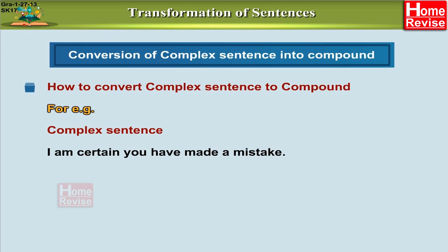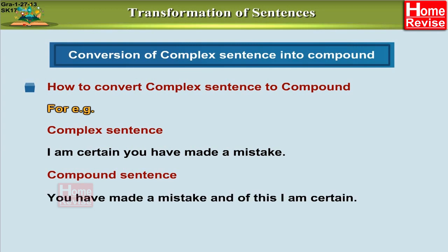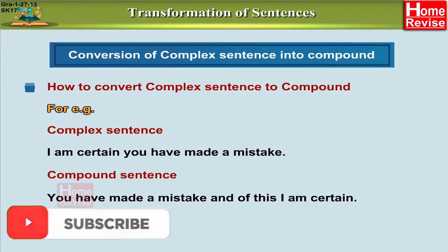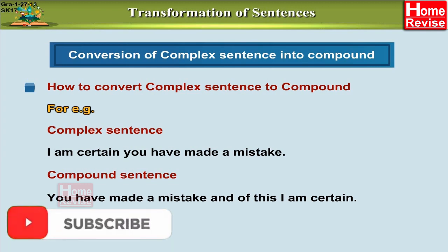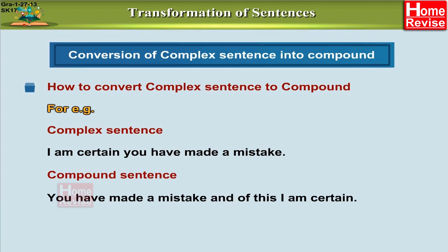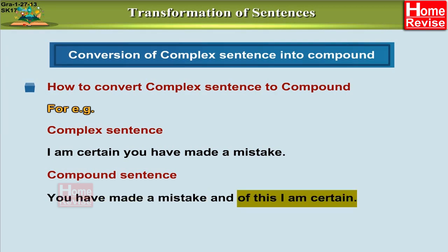Now we convert it into a compound sentence: 'You have made a mistake and of this I am certain.' We have changed the subordinate clause into a main clause, and now we have two principal clauses combined with the conjunction AND — 'you have made a mistake' and 'of this I am certain.'